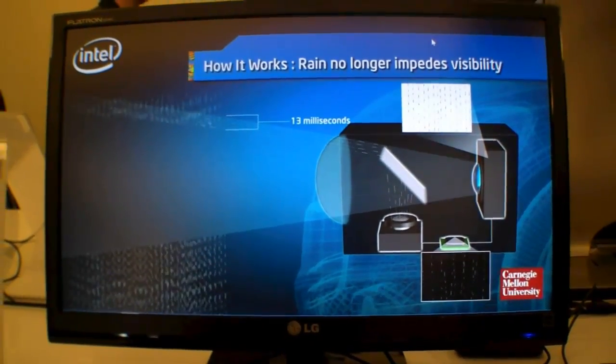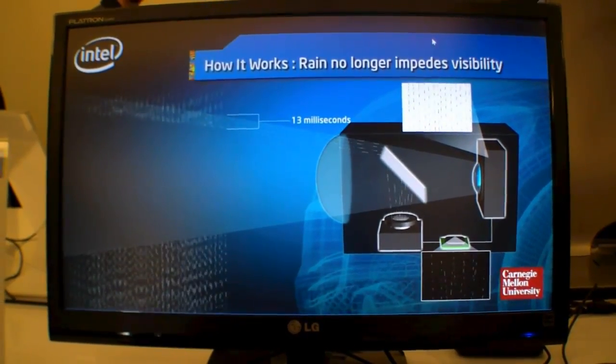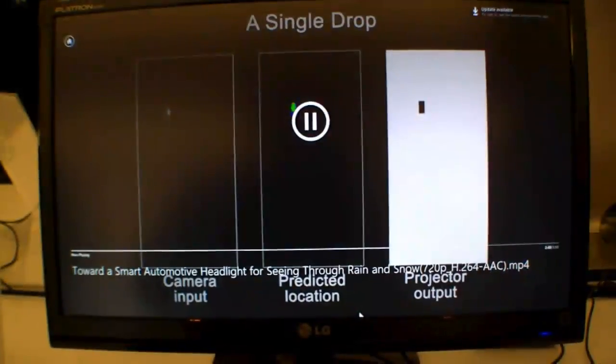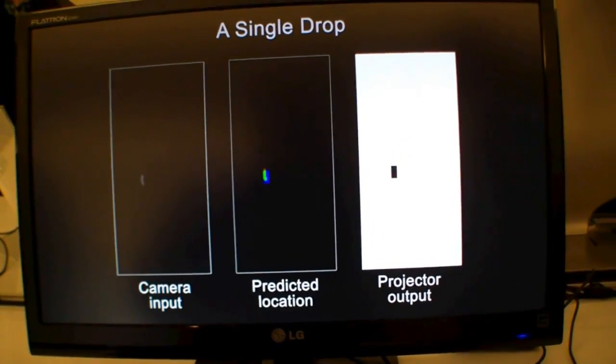You don't see those long streaks that you're familiar with when you're driving in a heavy rainstorm. So this is how the system is working.